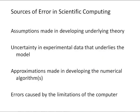Let's start by reviewing some of the sources of error in scientific computing. These sources are the assumptions that we make in developing the underlying theory of a mathematical model, the uncertainty in the experimental data that might underlie that model, for example, like some model constants, approximations made in developing the numerical algorithms, and what we'll focus on in this video, errors that can be caused by the limitations of using a computer to implement the algorithm.